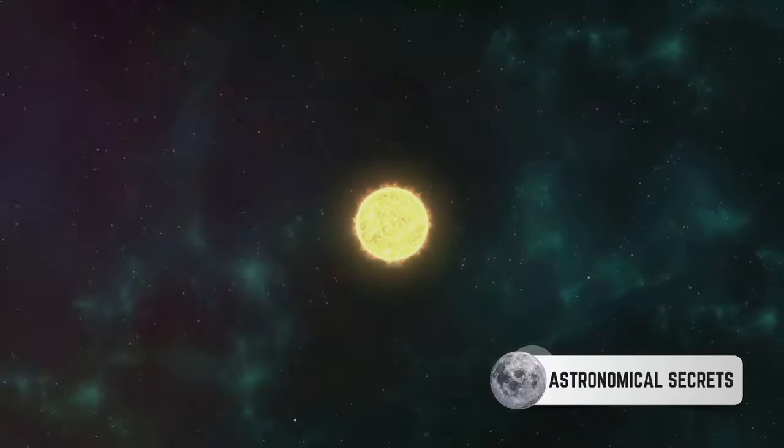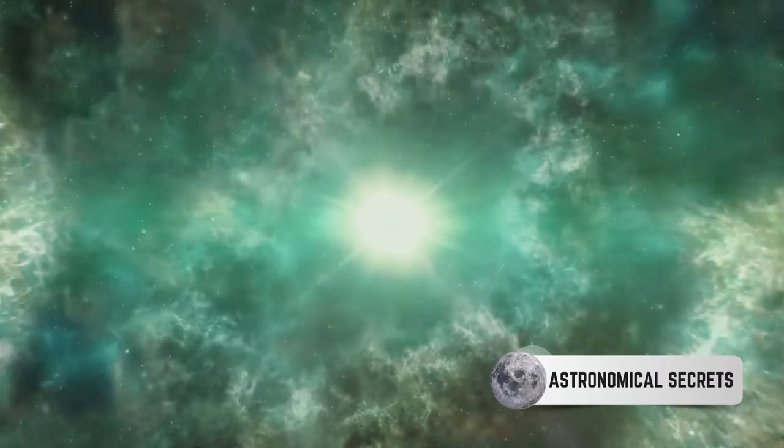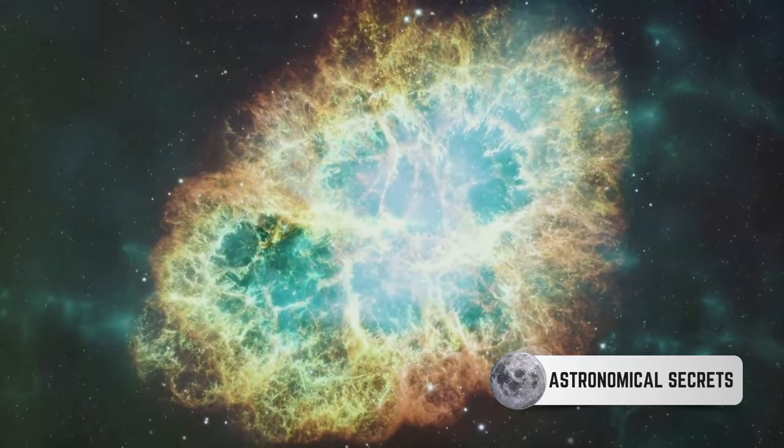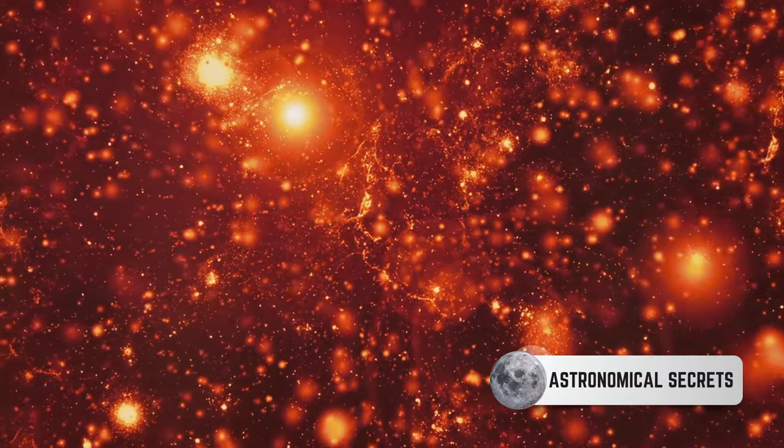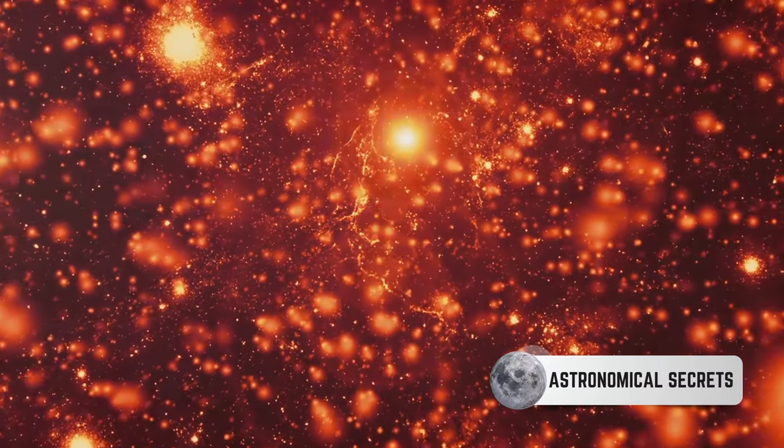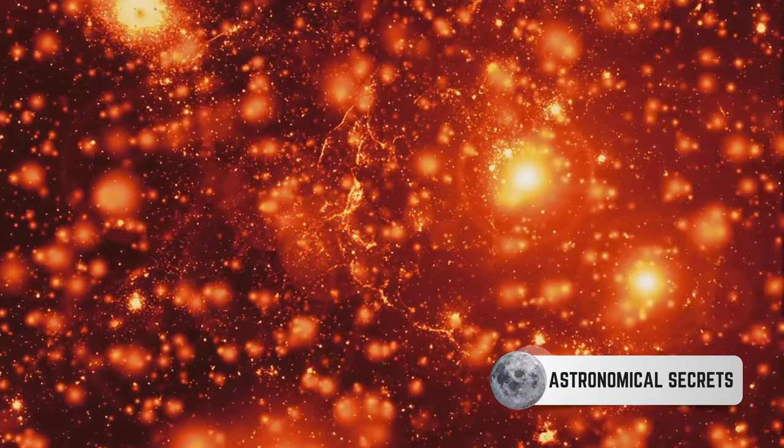However, nothing lasts forever. Once the star exhausts its nuclear fuel, it begins to die. The process of death varies depending on the star's mass. Small to medium-sized stars like our sun will balloon into red giants, then shed their outer layers, leaving behind a white dwarf. These white dwarfs will cool over billions of years to become black dwarfs.